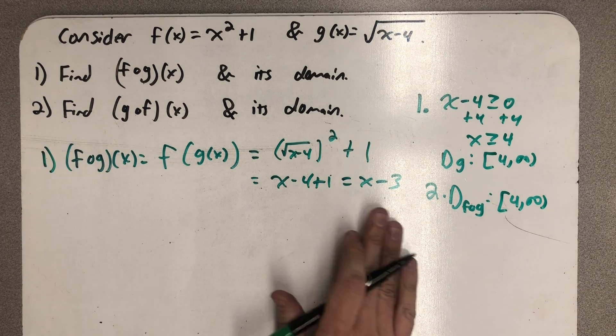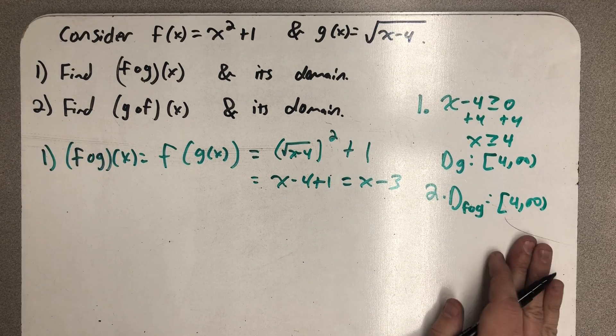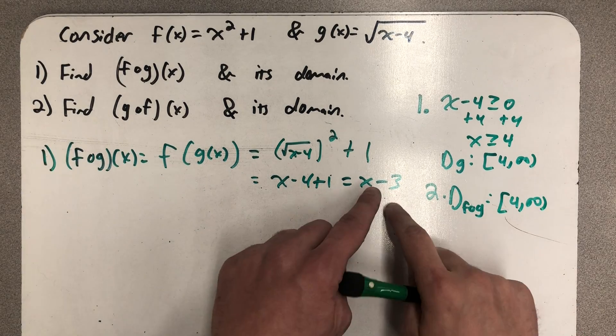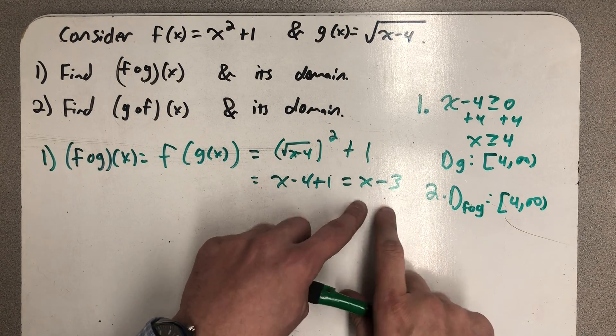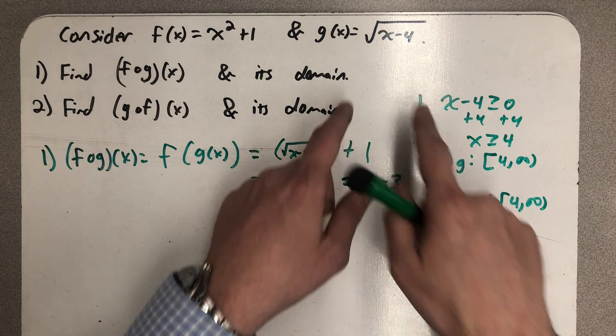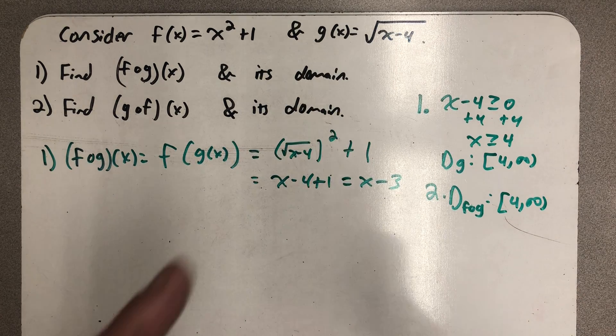I just get the domain of f composed with g is that domain from 4 to infinity. So here's f composed with g. I'm only allowed to use the x's from 4 to infinity, even though if I just looked at this formula, I might miss it. I know all my x's have to be able to go into the inside function first.